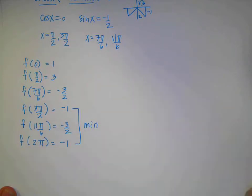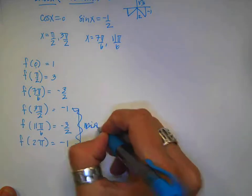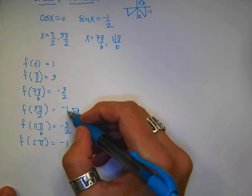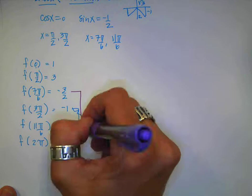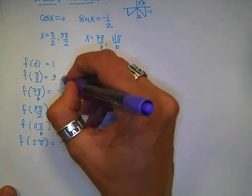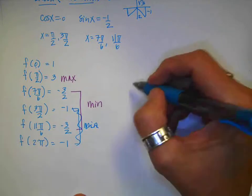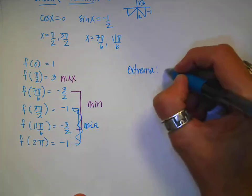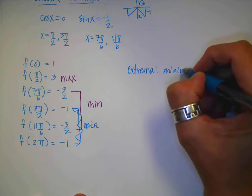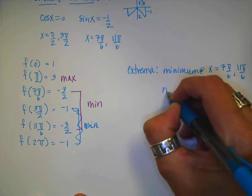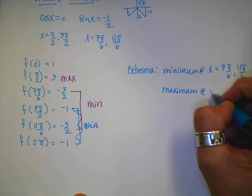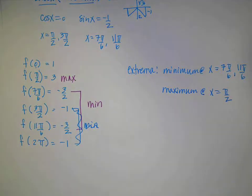So I have two minimum values at negative 3 halves, occurring at x equals 7π over 6 and 11π over 6, and a maximum value of 3 at x equals π over 2. Since they asked me to find the extrema, I report: minimum at x equals 7π over 6 and 11π over 6, and maximum at x equals π over 2.